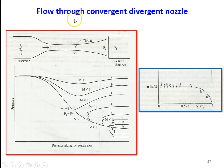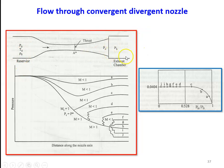Next is the flow through the Convergent Divergent Nozzle. Again, we have a reservoir where the properties are stagnation properties: P0, T0, and rho0 — stagnation pressure, stagnation temperature, and stagnation density. We have the exhaust chamber where PB is the back pressure and PE is the exit pressure. The geometry consists of a convergent nozzle section, followed by a throat section, and then the divergent nozzle.